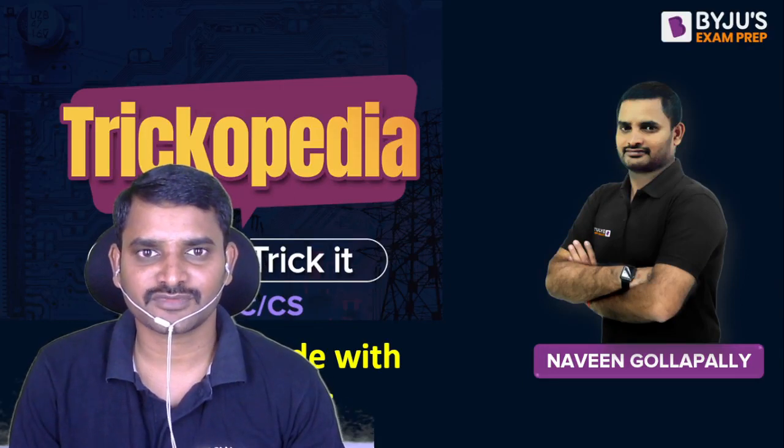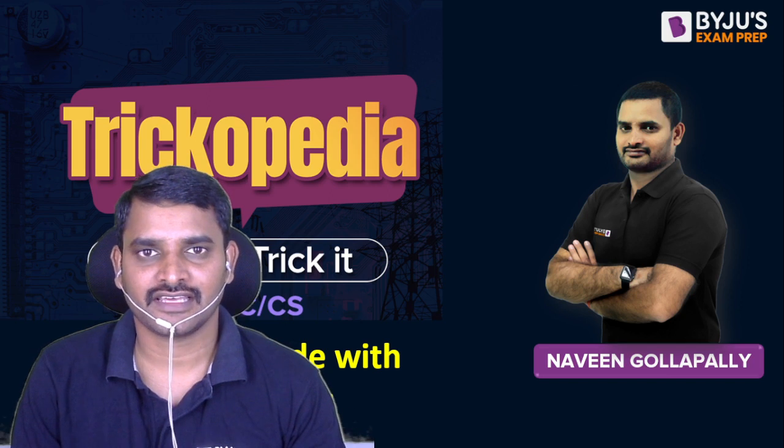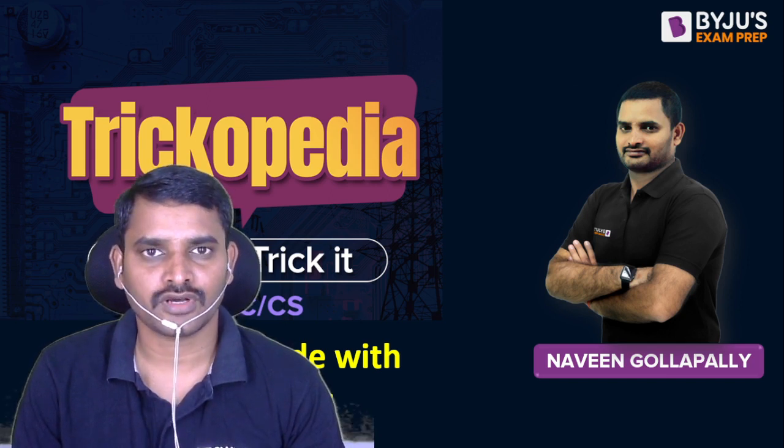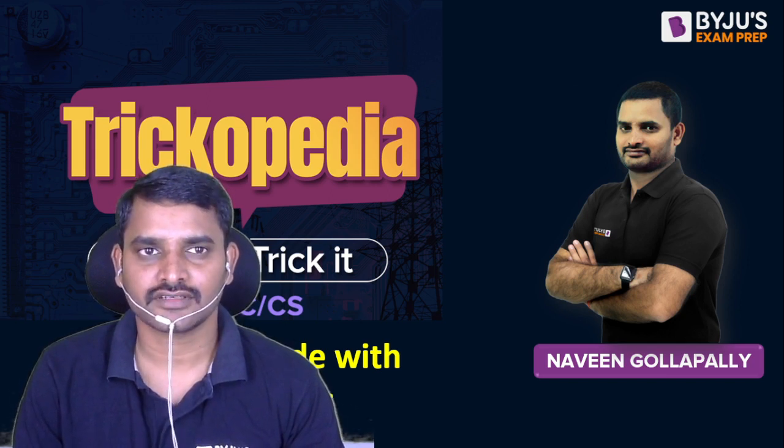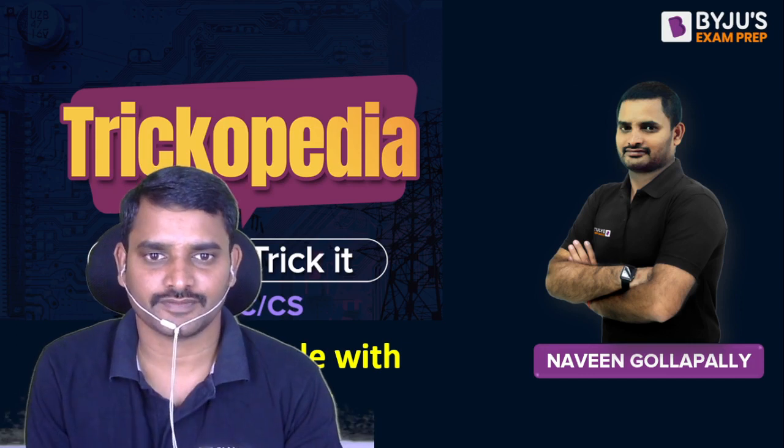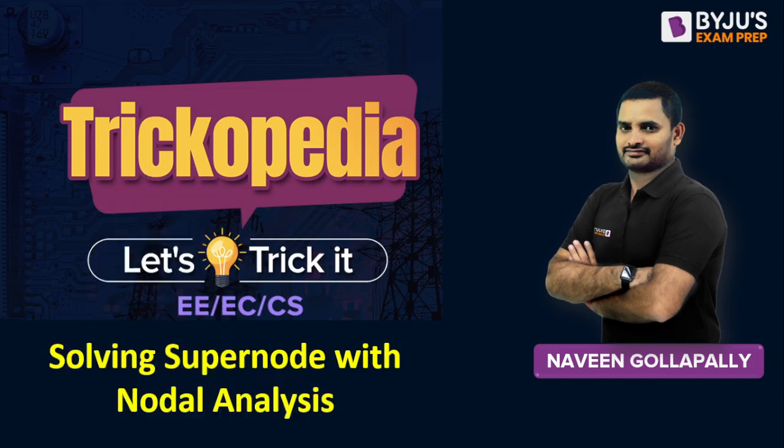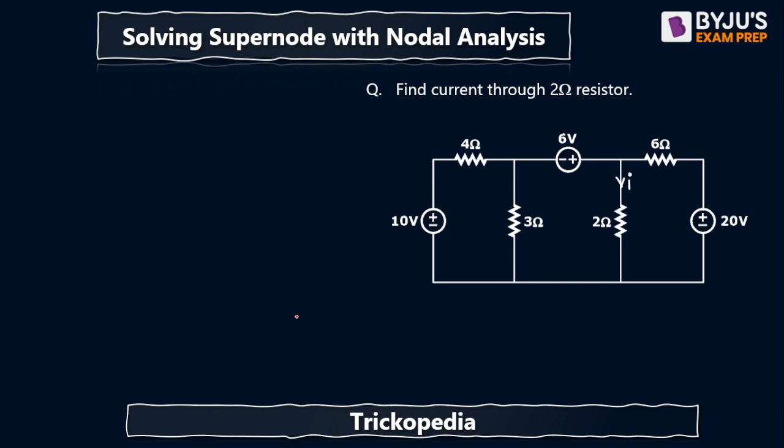Hi, welcome to Trickopedia. Here I am going to solve a question on supernode - solving supernode with nodal analysis. Let me show you the question. The question is: find current through 2 ohms resistance.